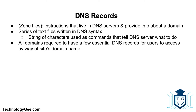DNS records, also known as zone files, are instructions that live in authoritative DNS servers and provide information about a domain, including what IP address is associated with that domain and how to handle requests for it. These records consist of text files written in DNS syntax — a string of characters used as commands that tell the DNS server what to do. Think of DNS records like a business listing on Yelp. All domains require at least a few essential DNS records for users to access a website using a domain name, with several optional records serving additional purposes.